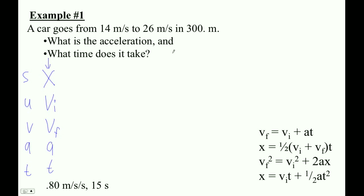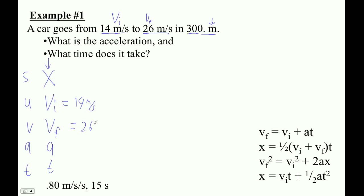We've got to figure out which numbers go with which letters. The best way is to look at the units — that's a good clue. We know that the first two are both in meters per second, so those are velocities. Which one is final and which one is initial? Well, it says 'from' and 'to.' So the 'from' is going to be the first velocity, your starting velocity, and then the 26 is going to be your ending velocity — initial and final.